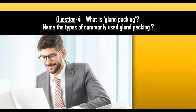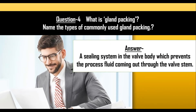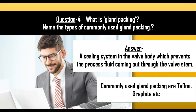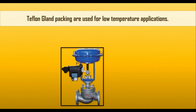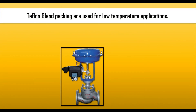The next question is: what is gland packing? Name the types of commonly used gland packing. Gland packing is a sealing system in the valve body that prevents the processed fluid from coming out through the valve stem. Commonly used gland packings are Teflon and graphite. Teflon gland packing is used for low temperature applications — if we are using a control valve for low temperature, then Teflon gland packing is used.